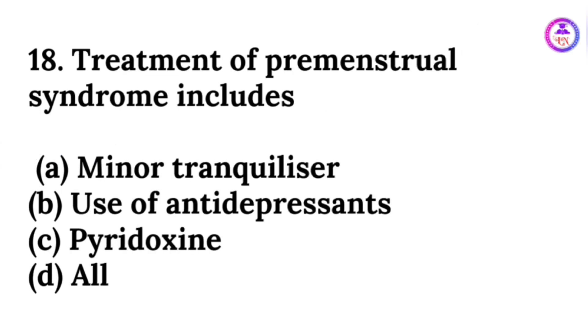Treatment of premenstrual syndrome includes all of these: minor tranquilizers, use of antidepressants, and pyridoxine. So treatment includes all of these.